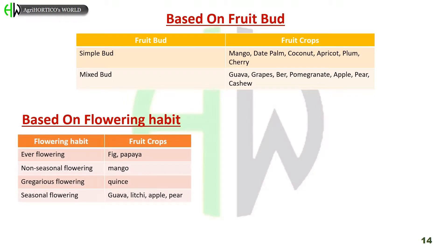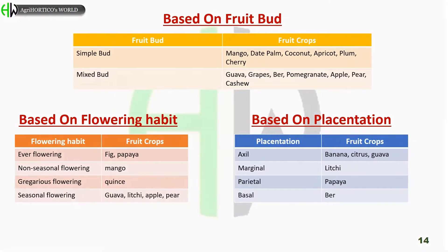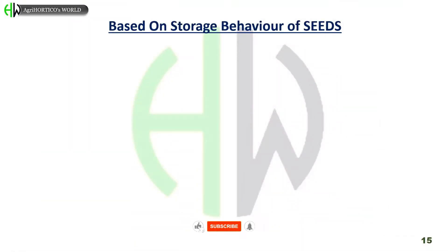Classification based on flowering habit. Ever-flowering trees are fig and papaya. Non-seasonal flowering is seen in mango. Gregarious flowering is seen in quince. Seasonal flowering is seen in guava, litchi, apple, and pear. Type of placentations: axile placentation in banana, citrus, and guava. Marginal placentation in litchi. Parietal placentation in papaya. Basal placentation in bael.